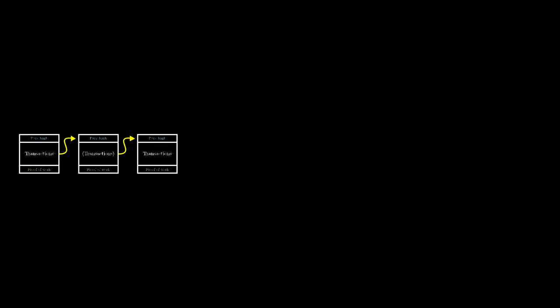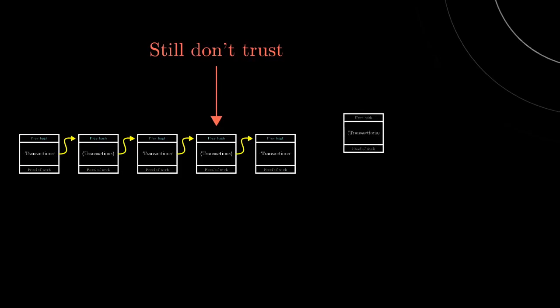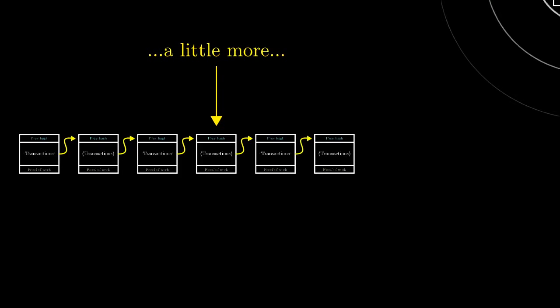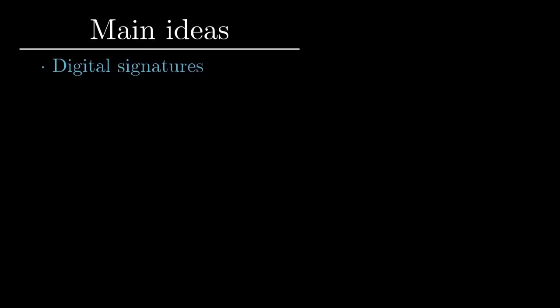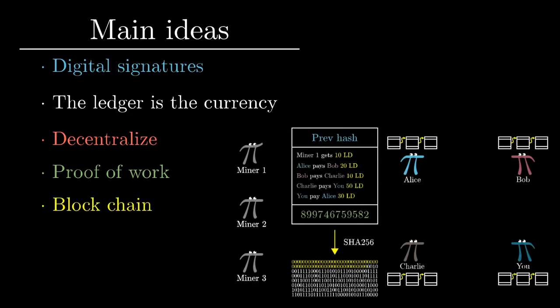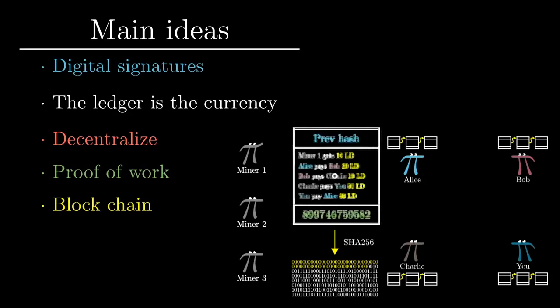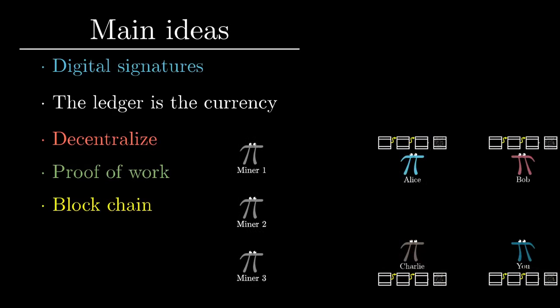Notice, that means that you shouldn't necessarily trust a new block that you hear immediately. Instead, you should wait for several new blocks to be added on top of it. If you still haven't heard of any longer blockchains, you can trust that this block is part of the same chain that everyone else is using. And with that, we've hit all the main ideas. This distributed ledger system based on a proof of work is more or less how the Bitcoin protocol works, and how many other cryptocurrencies work. There's just a few details to clear up.